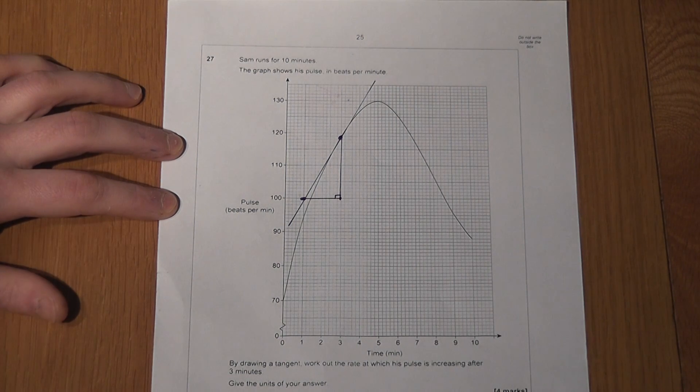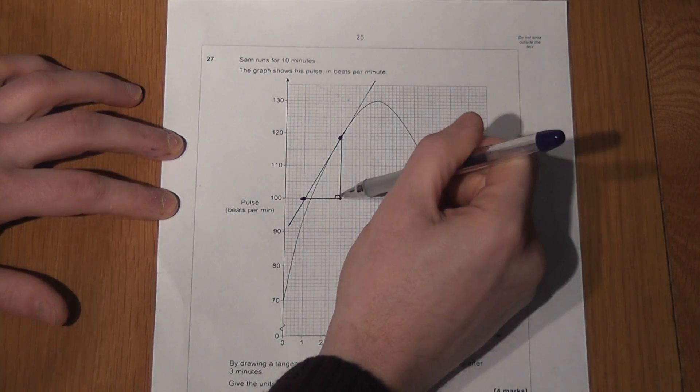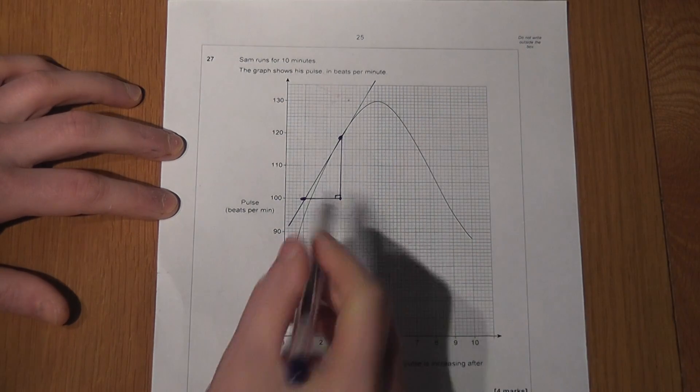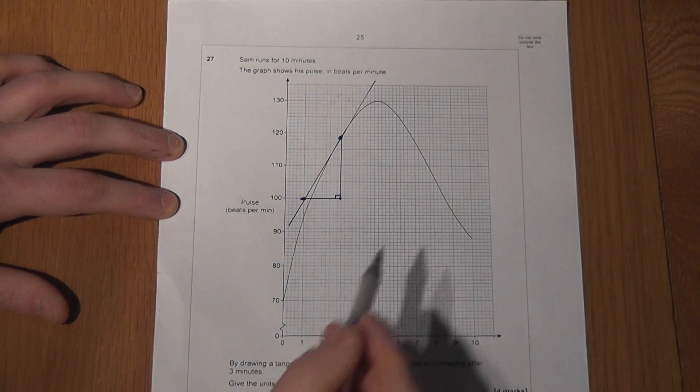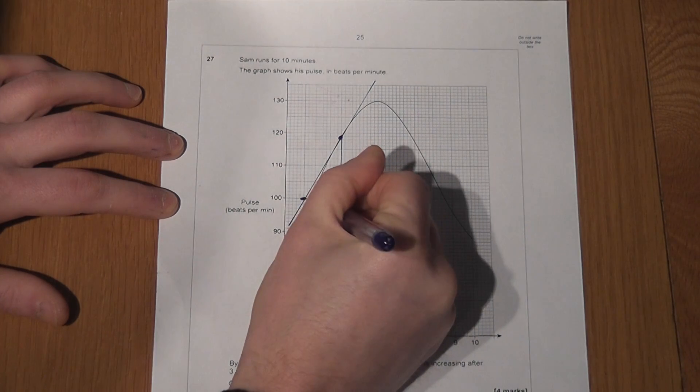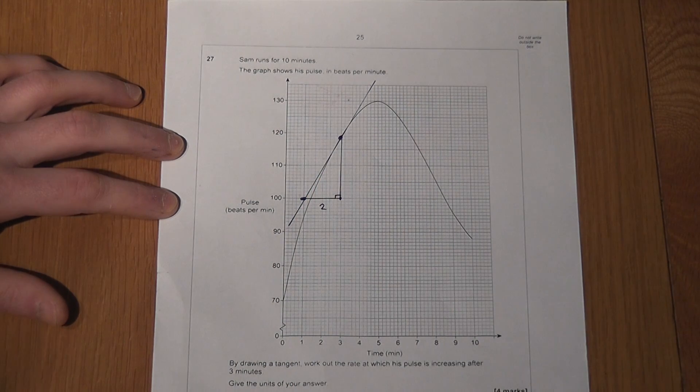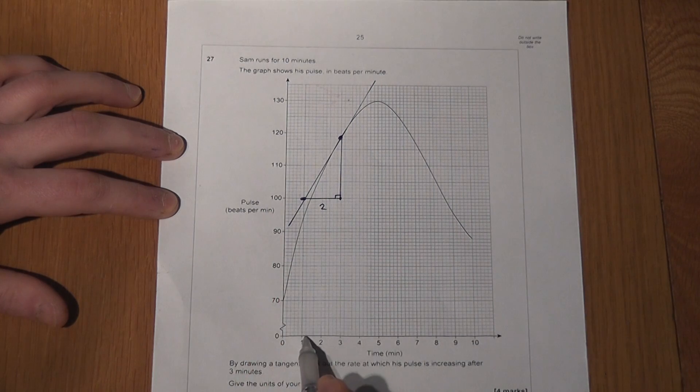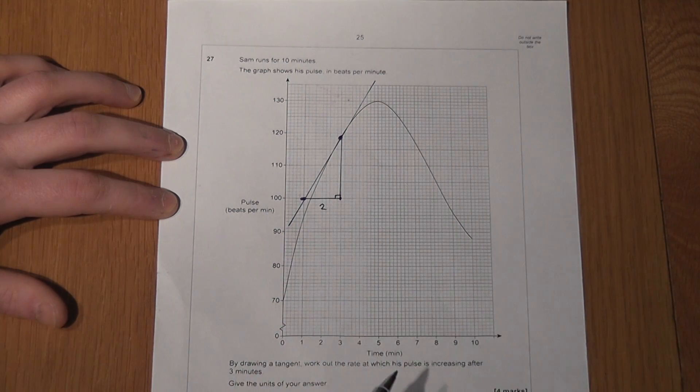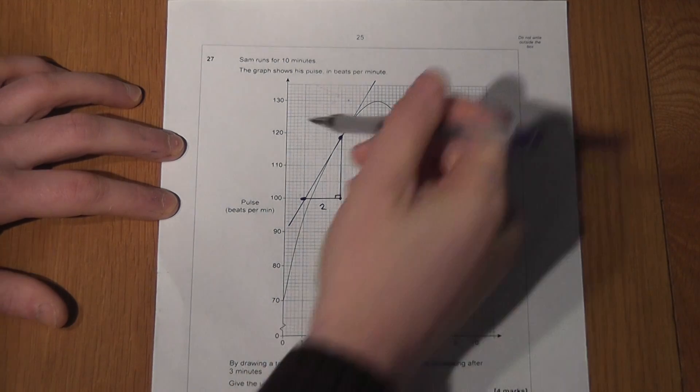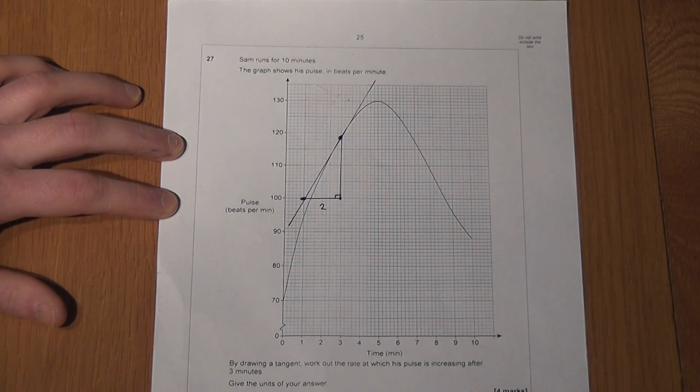Now to find the gradient, I need to find how much it increased by and how long it took. Now this happens to be two across. I drew mine to be two across. From one to three is two. I can now find the height of this triangle as well.